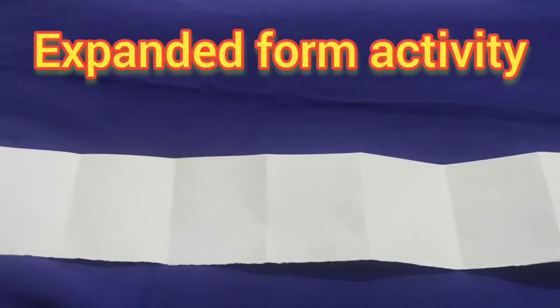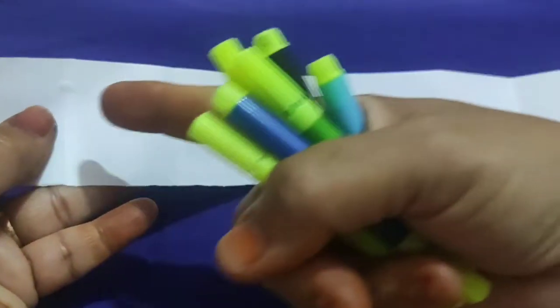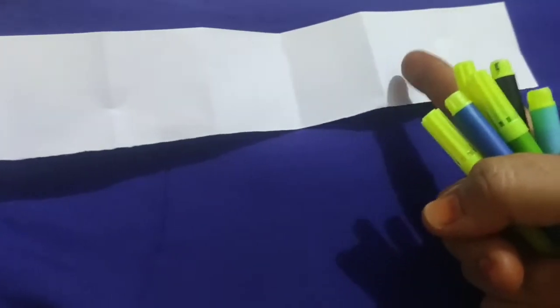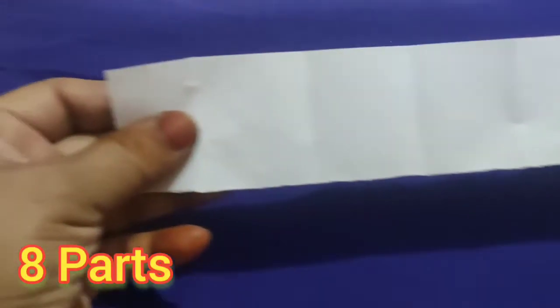Hello children, today we are going to do the expanded form activity. How to do the expanded form activity? I had taken plain paper and divided it into 1, 2, 3, 4, 5, 6, 7, 8 parts - divided into 8 parts.